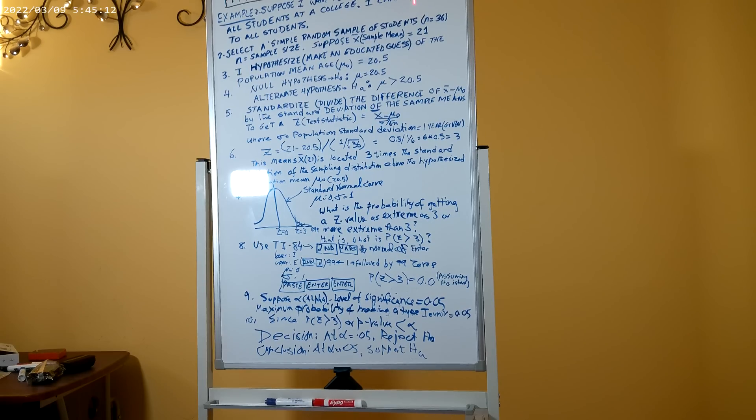Suppose I want to find the mean age of all students at a college. I cannot reach out to all the students, so we select a simple random sample of students, n equal to 36. Suppose the mean of this sample works out to 21. I hypothesize, or make an educated guess, of the population mean H mu sub 0 as 20.5.